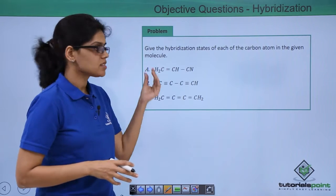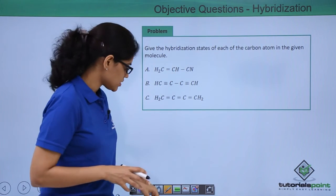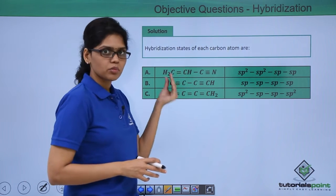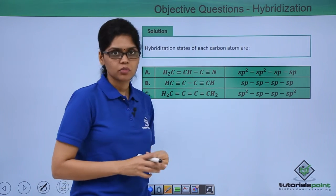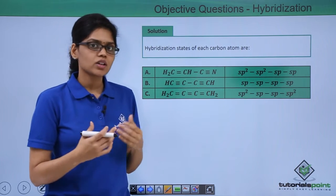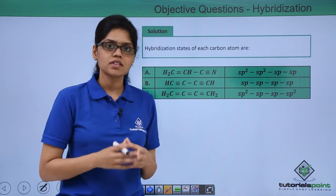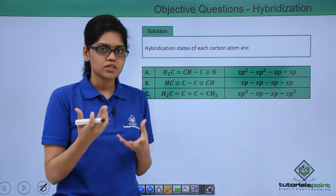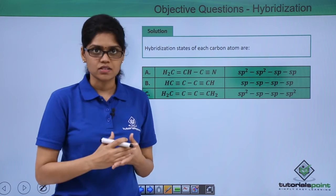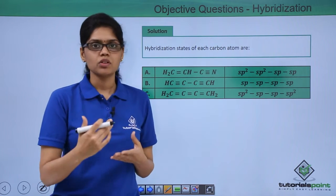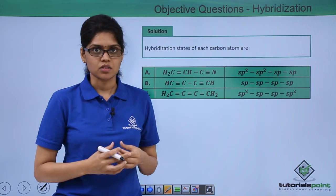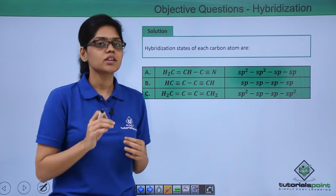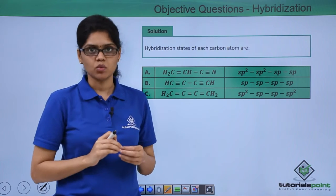Looking at the first structure CH₂=CH-C≡N, the first carbon atom is involved in a double bond and the next carbon is involved in a triple bond. A general and easy way of identifying the hybridization state is to see what sort of bonding is involved. If it has a double bond it is most likely SP2 hybridization, and if it has a triple bond we can assume it is SP hybridization. However, to confirm the hybridization state we also need to confirm the number of sigma bonds involved.